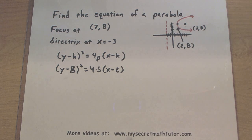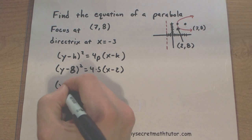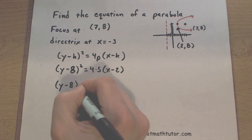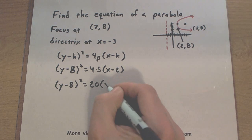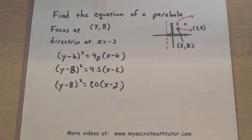And now we basically just simplify this. So let's see, 4 times 5, 20. And we're done.